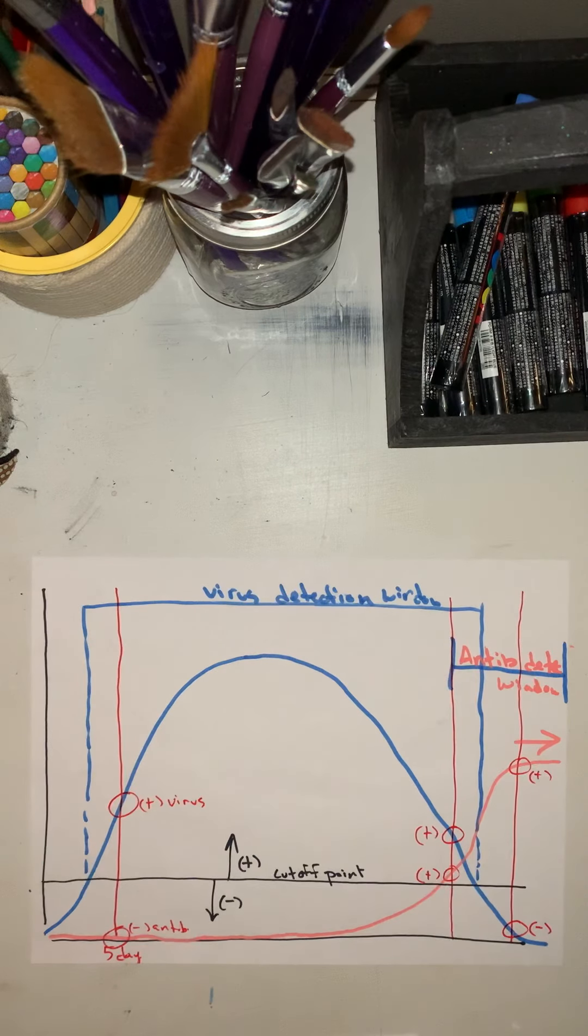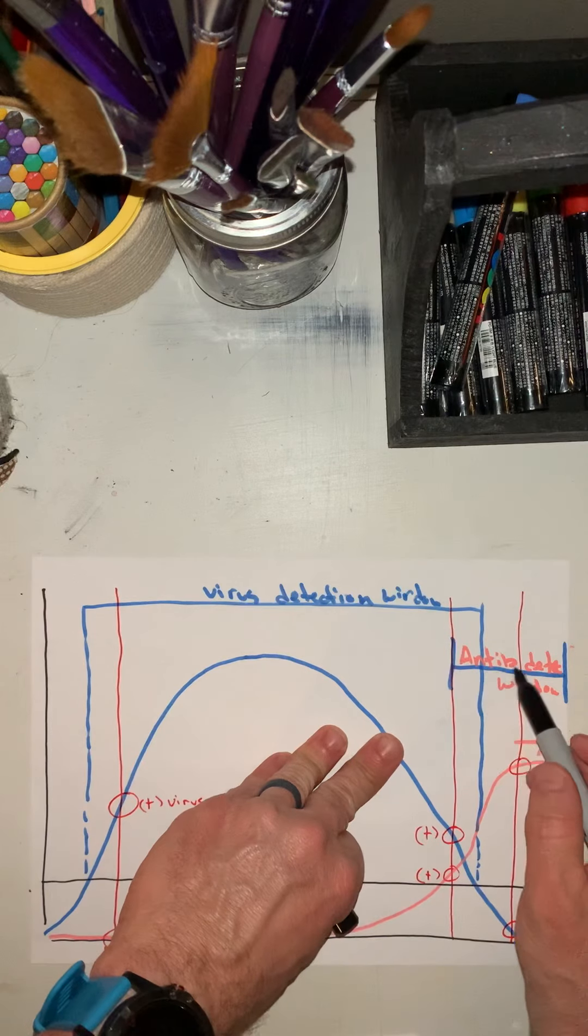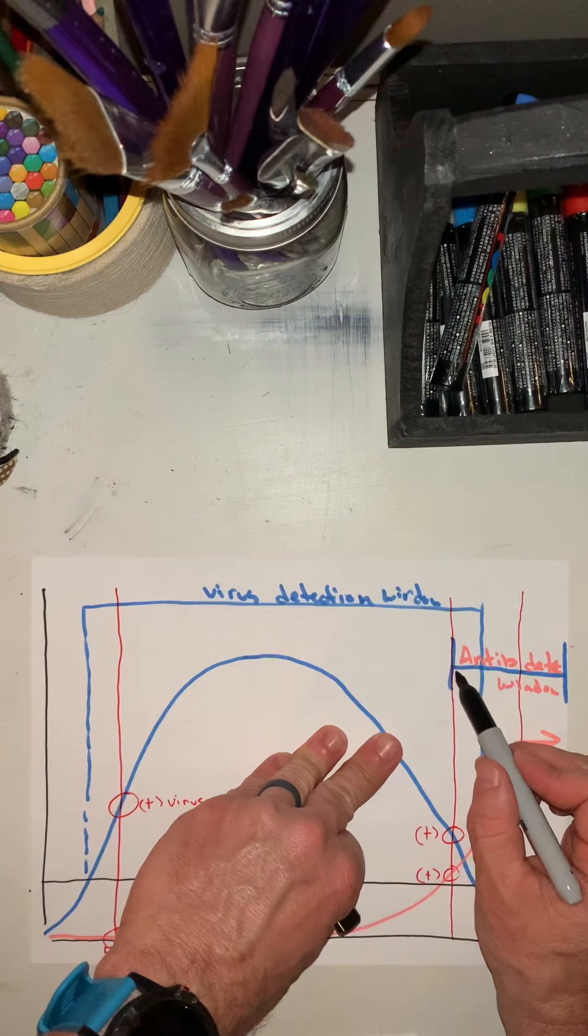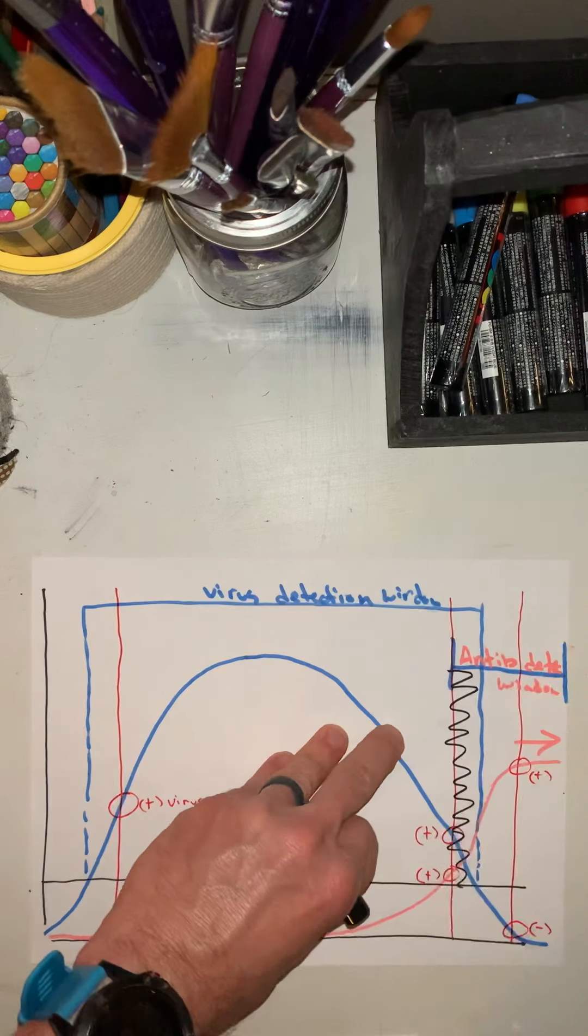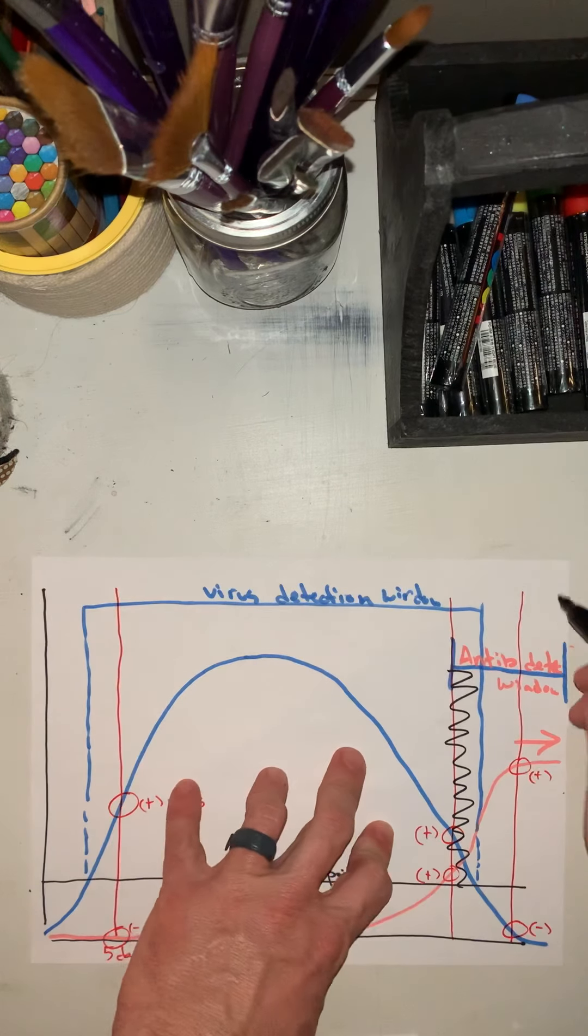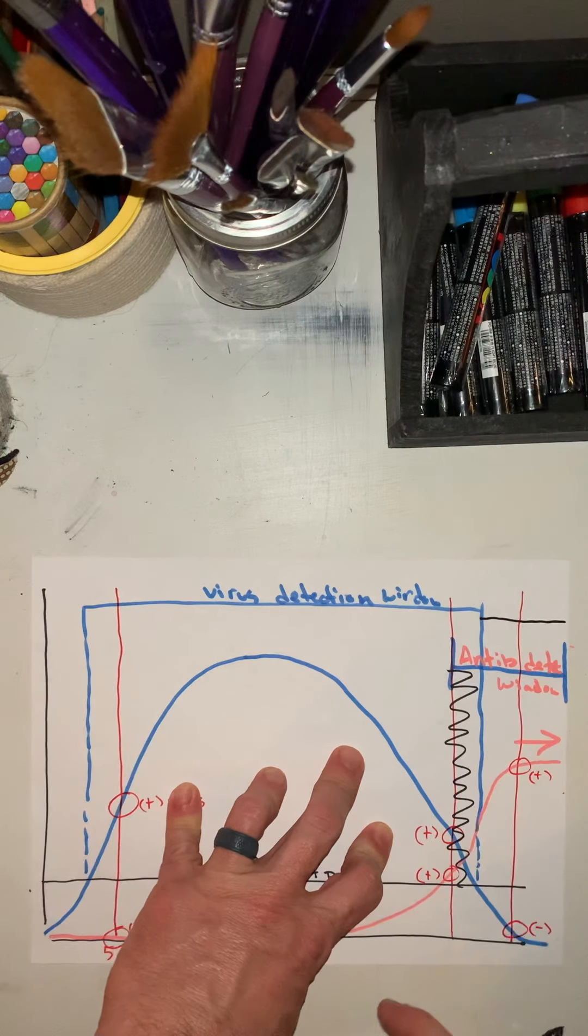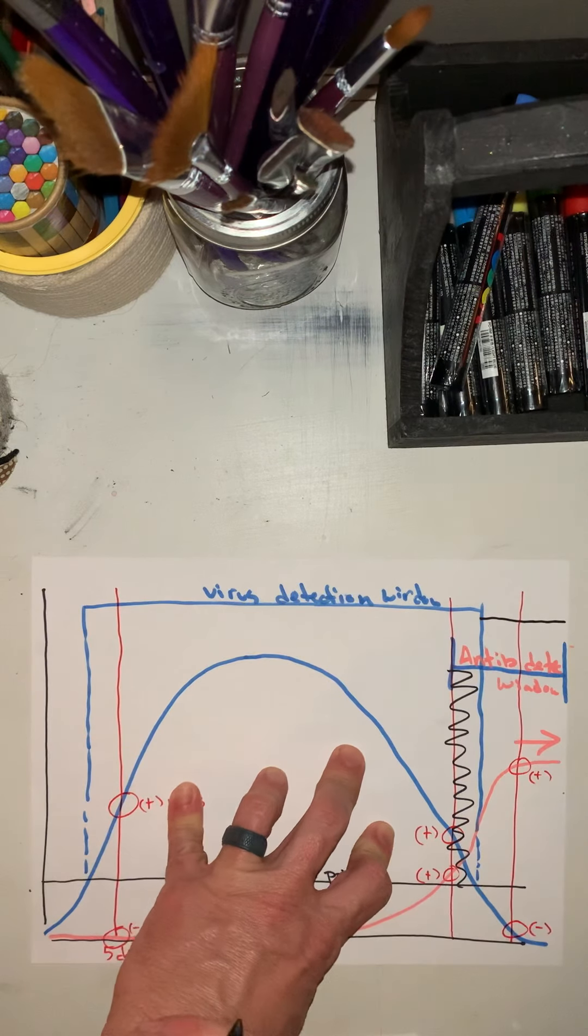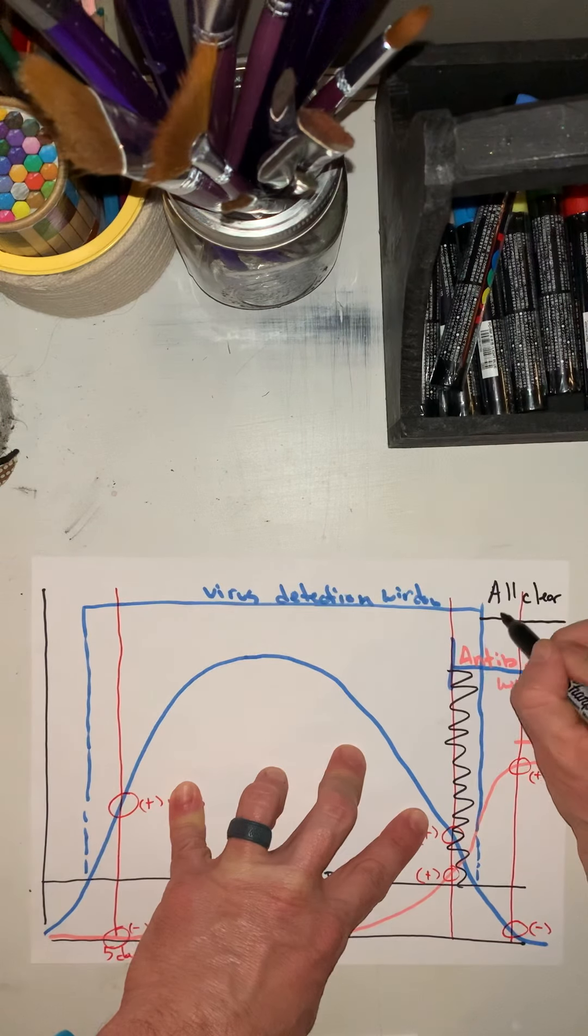And this space right here is the space between positive for the antibodies, as well as positive for the virus. Now, the important point in this is after this time period, where the antibodies are positive and the virus is now negative, this is your all-clear window.